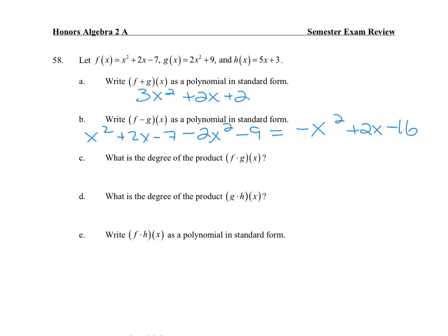The degree of the product of f and g: x² times x² will be x to the fourth. And for d, g times h, so x² times x is a degree of three.